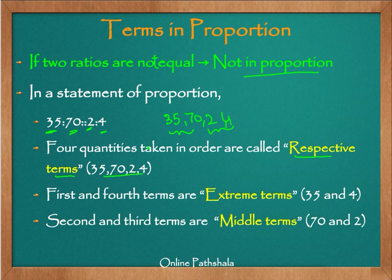To quickly revise: proportion simply means comparison of ratios. If two ratios are equal they are said to be in proportion; if not equal, they are not in proportion. To check whether ratios are in proportion, we reduce them to their lowest form and see whether they are the same. See you in the next video where we will solve some problems using proportion.